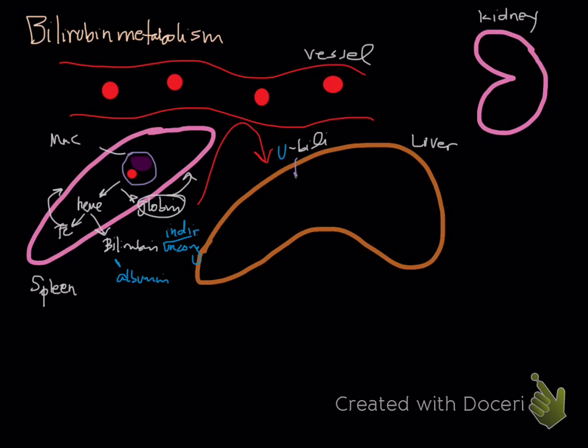Getting into the liver is the first step, and we'll talk about how that can be impacted. Once it's in the liver, it has to be conjugated. That's the next step. Conjugation happens, and the liver does this with lots of substances. By conjugating it, it makes it water-soluble so it can be excreted.